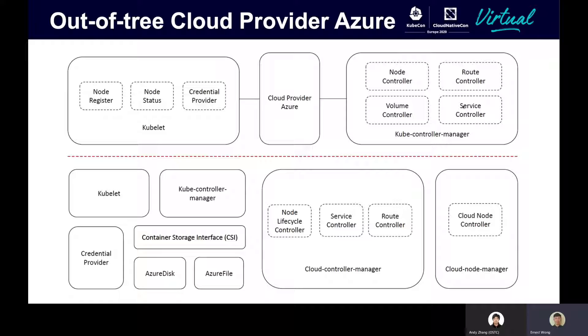Last but not least, there is the external credential provider. Kubelet is responsible for fetching tokens to pull images from a private registry, and different cloud providers have their own implementation of how they achieve this. With an external credential provider interface, a cloud provider like Azure can implement it and extract the logic to a separate project. With this external credential provider, we can fetch tokens from Azure Active Directory so that users don't have to provide credentials when pulling images from Azure Container Registry. The goal of moving all these things out of tree is to make the development process more friendly and avoid redundant logic within the core Kubernetes repository.